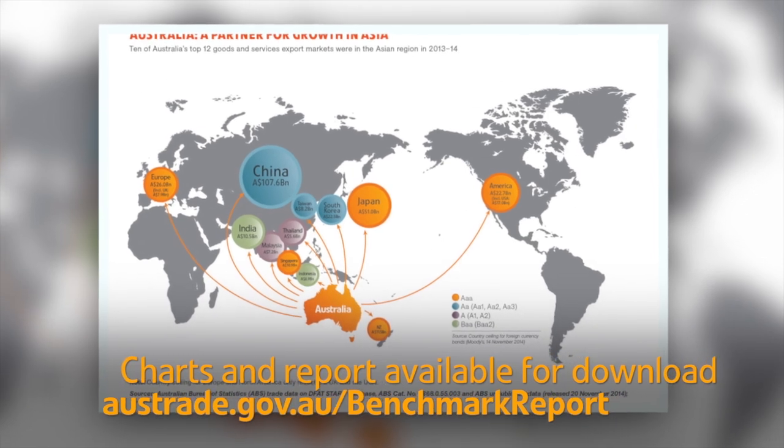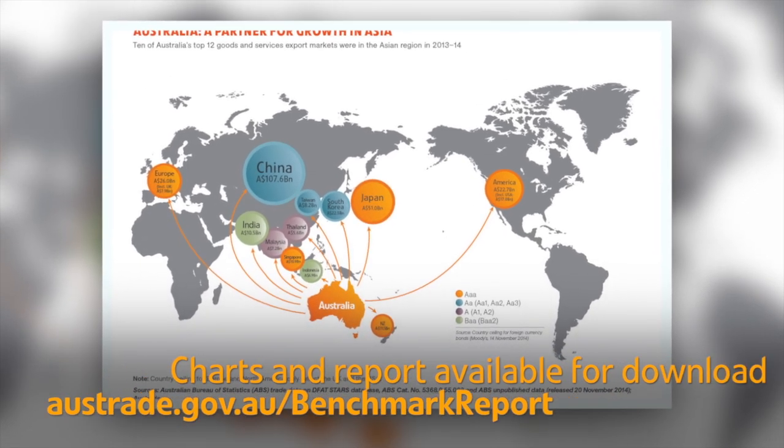So what the Benchmark Report in 2015 does is it says: here are all of our traditional strengths, here is our ability to adapt to the new version of the world economy that we're living in — put those things together, and yet again you see Australia is a really attractive partner: a great place to do business, a great place to invest, a great country to trade with.